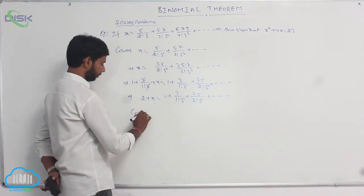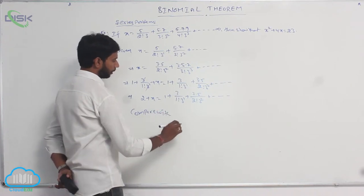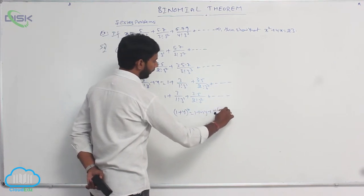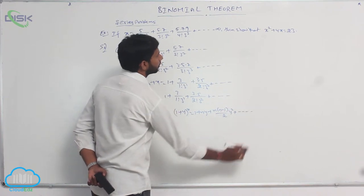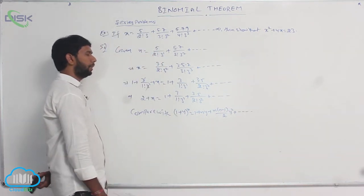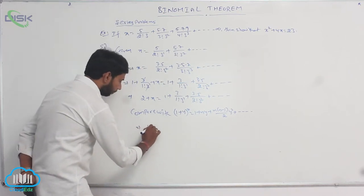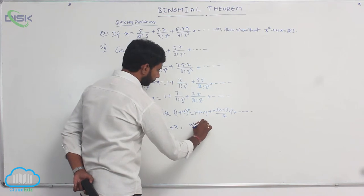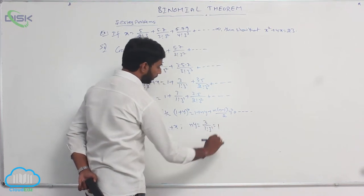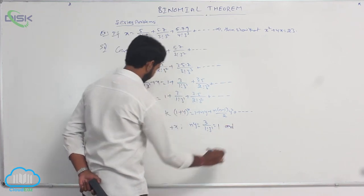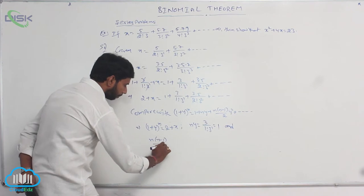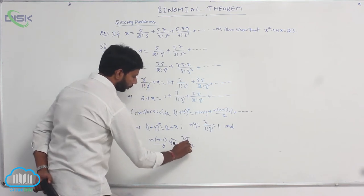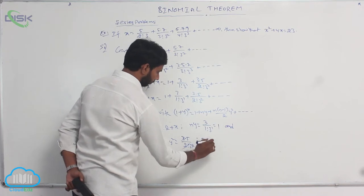Compare with the binomial expansion: 1 plus y whole power n equals 1 plus ny plus n into n minus 1 by 2 into y squared, and so on. This implies 1 plus y whole power n equals 2 plus x, and ny equals 3 by 1 factorial into 3 to the power 1, which equals 1, and n into n minus 1 by 2 into y squared equals 3 into 5 by 2 factorial into 3 squared, which simplifies to 5 by 3.